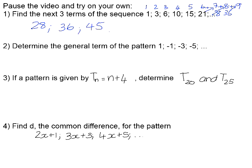Number 2: determine the general term of the pattern 1, −1, −3, −5. We need to be careful because we're not adding — we're subtracting 2 each time. So the general term goes in multiples of negative 2. Looking at position numbers 1, 2, 3, 4: −2 × 1 = −2, so we need to add 3 to get back to 1. Check position 2: 2 × (−2) = −4, plus 3 is −1. So the general term is T(N) = −2N + 3.